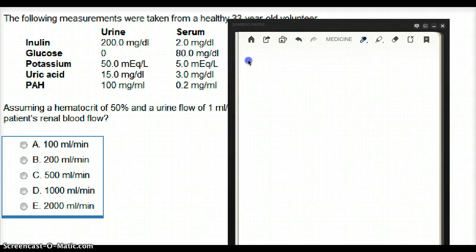All right, so they want us to find renal blood flow. Renal plasma flow and renal blood flow is not the same thing. Renal blood flow is equal to renal plasma flow divided by 1 minus hematocrit.